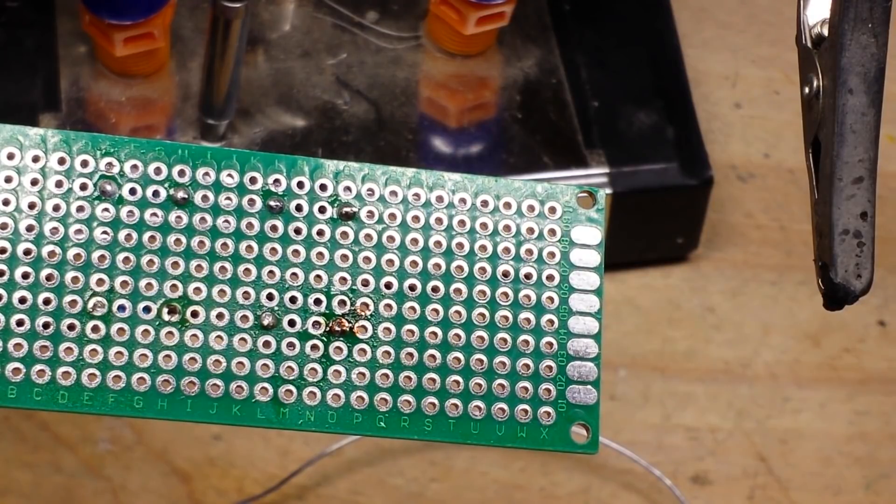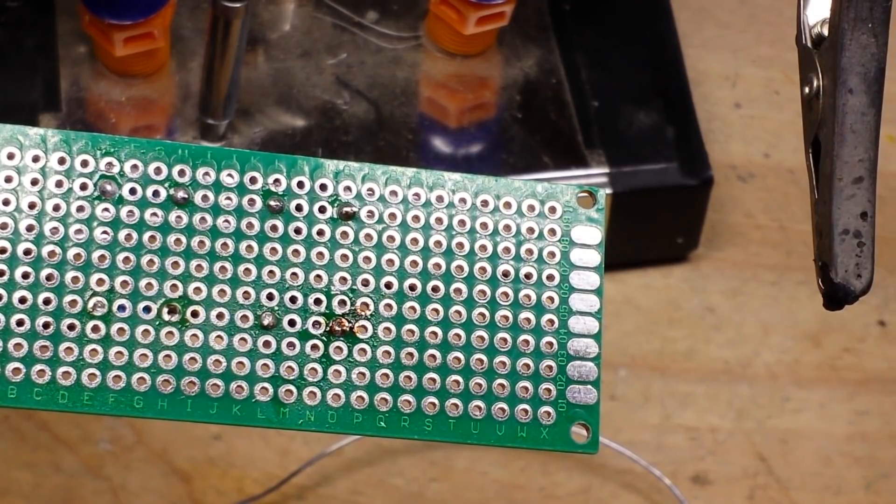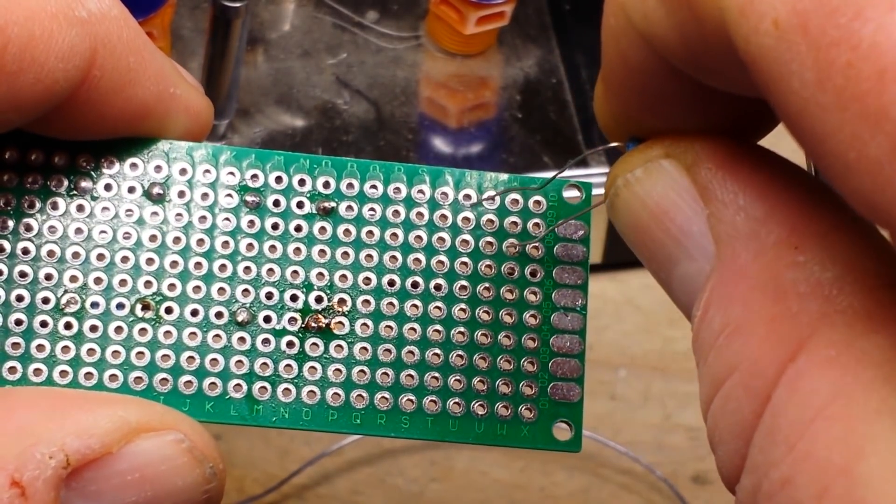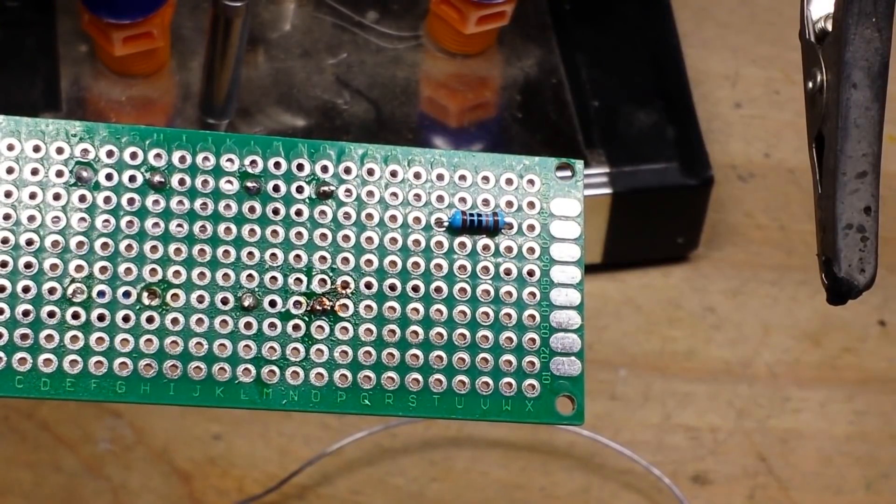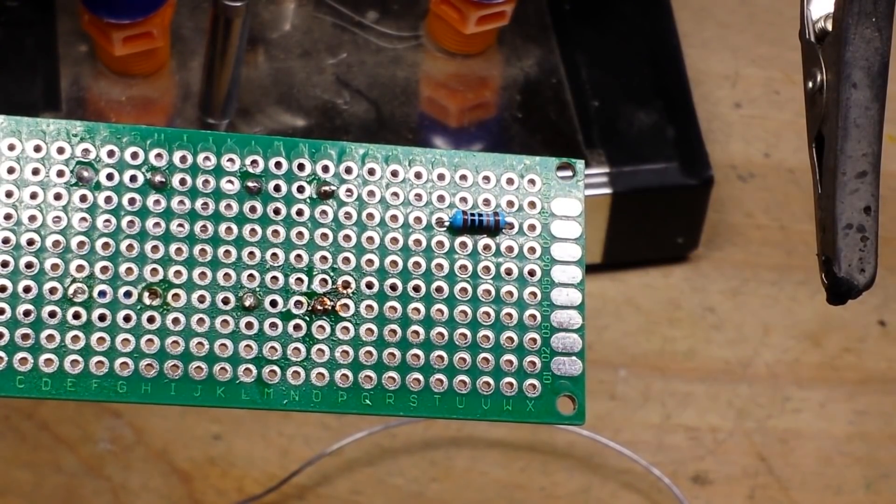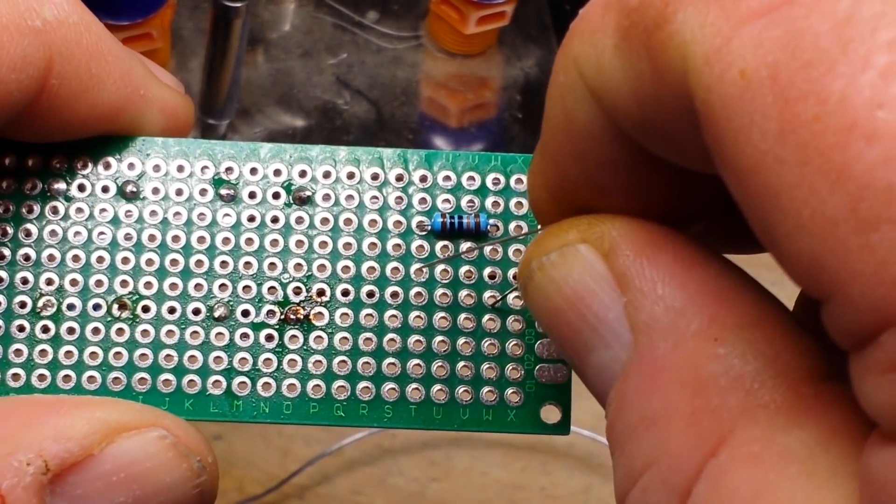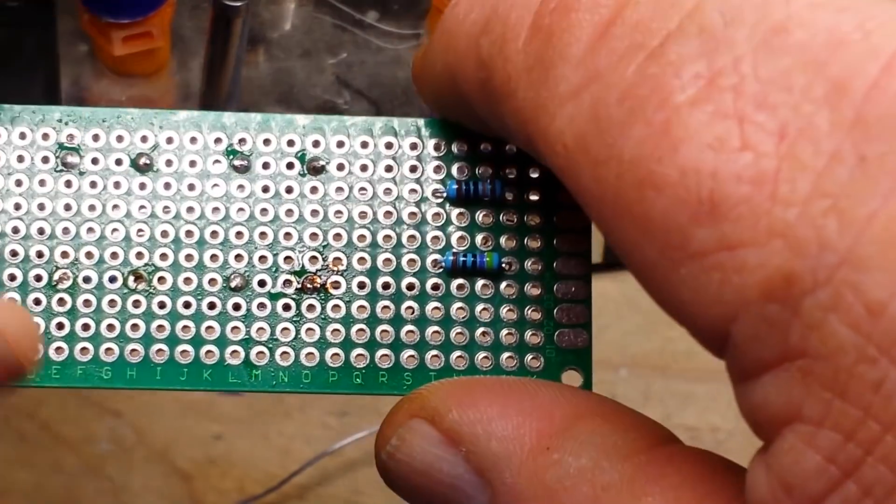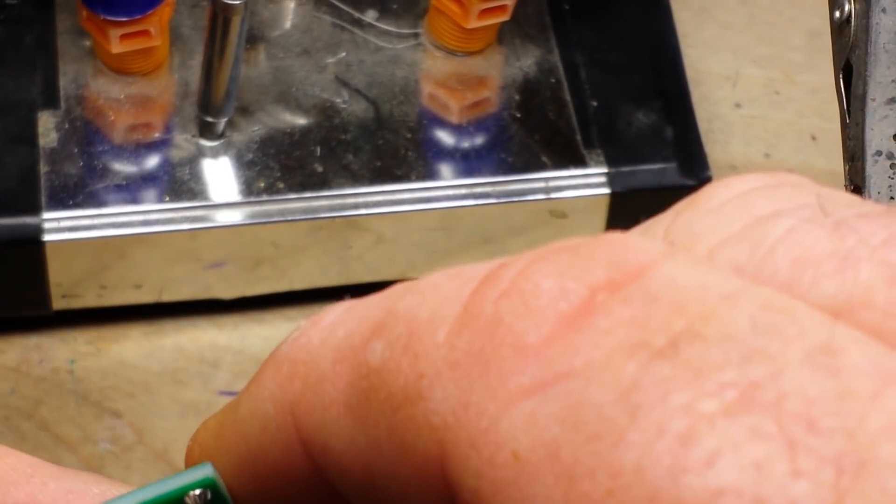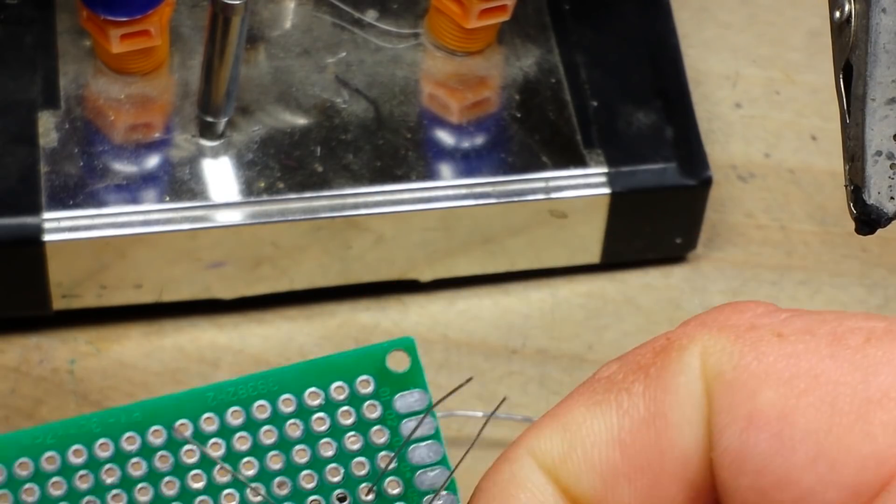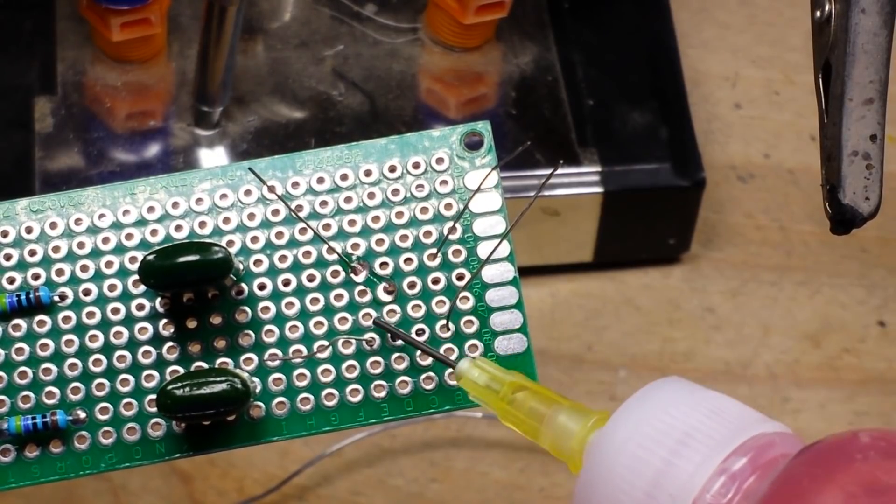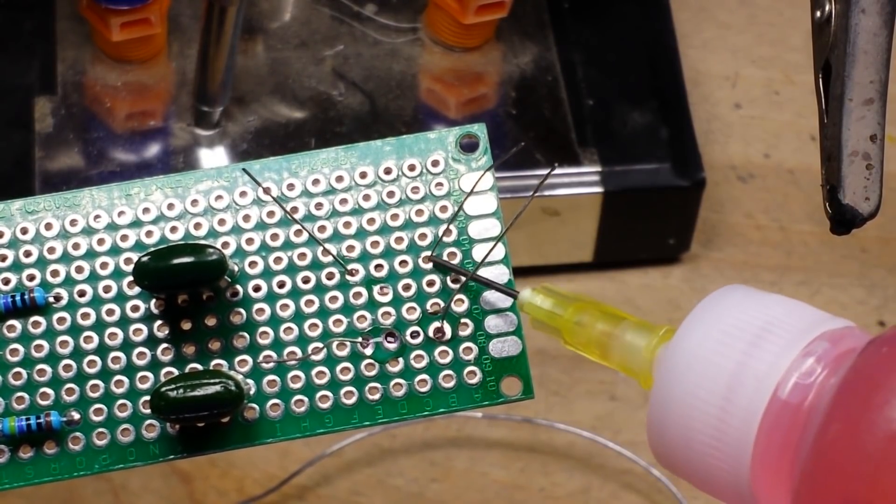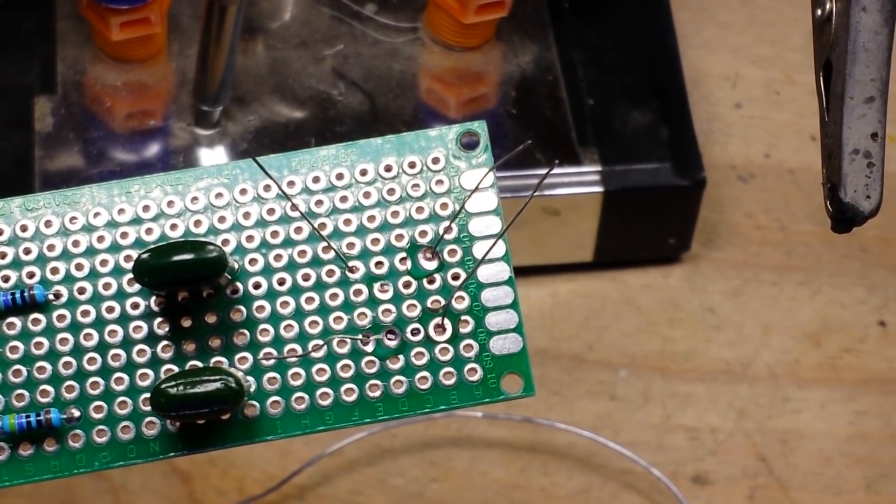Alright, next. Let's grab a couple more resistors here, pop them in there, and we'll get out the world's scariest soldering iron. Now it's not temperature controlled, so it is not ideal for electronics work, but we'll see how it does.